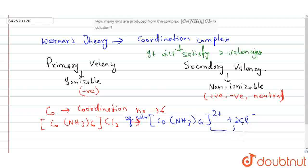We can find two Cl ions here and one whole complex ion, so we have a total of three ions in the equation.